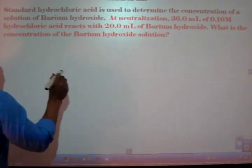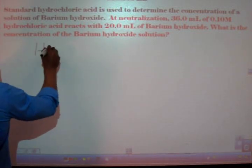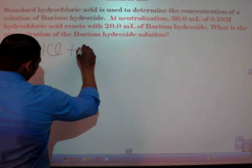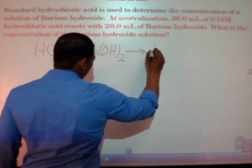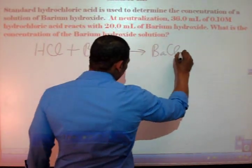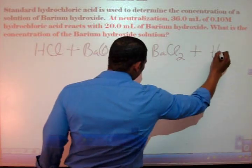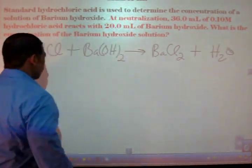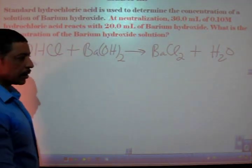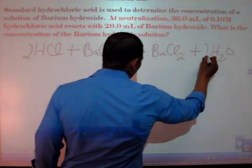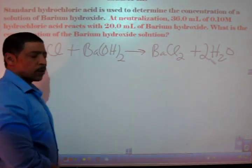In this case, HCl reacts with barium hydroxide to produce the salt, barium chloride, and of course water. Balancing our equation, we place a 2 in front of the hydrochloric acid and a 2 in front of the water.